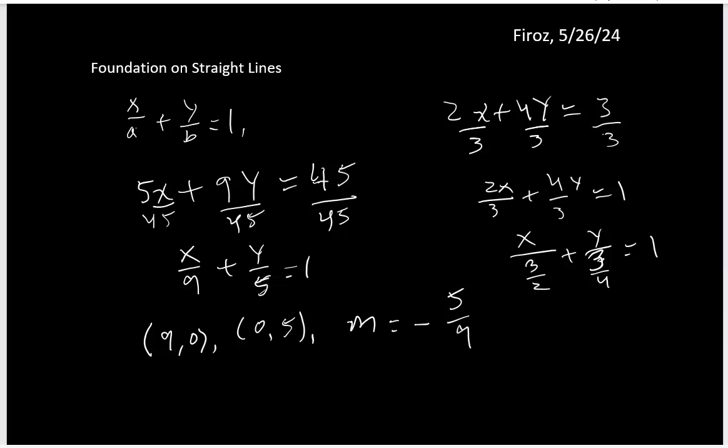So in this case now you see the intercepts are 3 over 2 comma 0, 0 comma 3 over 4. And the slope m will be minus b over a. So b is 3 over 4 and a is 3 over 2. And then further simplification will give you 3 over 4 times 2 over 3. So the 3s cancel out. You get negative 1 half. That is your slope.